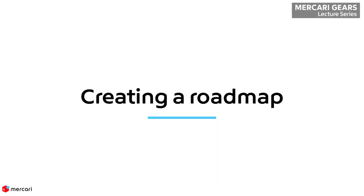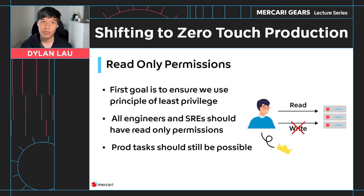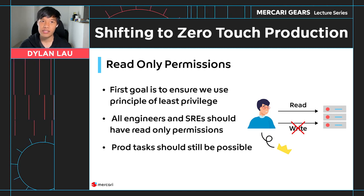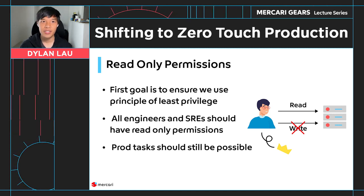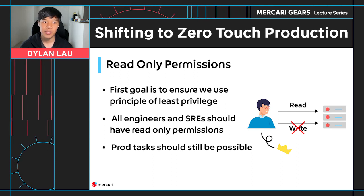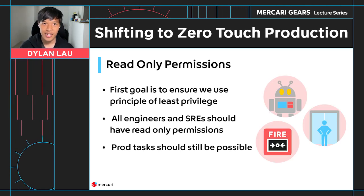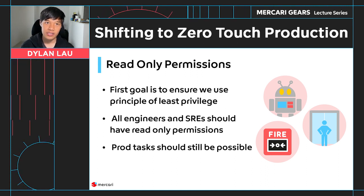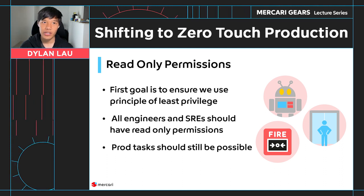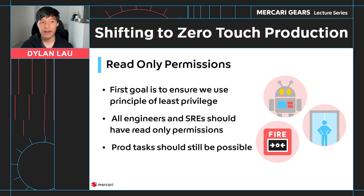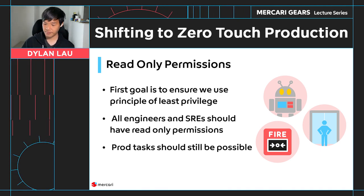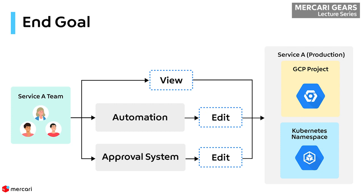Based on our previous state of production and our desired state of zero-touch production, we needed to come up with a roadmap to transition. Our first goal was to employ the principle of least required privileges for engineers. In zero-touch production, this means that everyone should have read-only permissions in production by default. However, all production tasks should still be possible to perform via automation, safe proxies, an approval system, or a break glass system. The end goal is to have users with view permissions by default, and they must use automation or an approval system to get edit permissions.